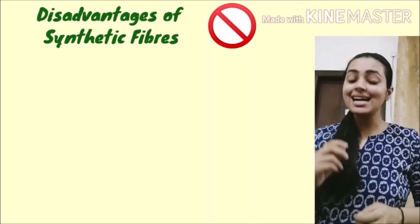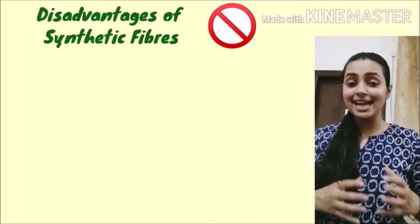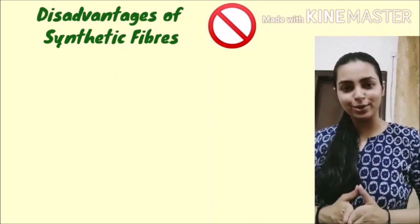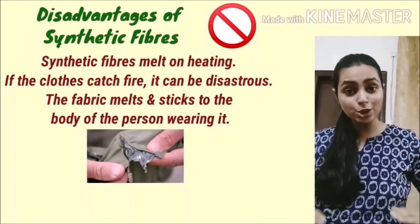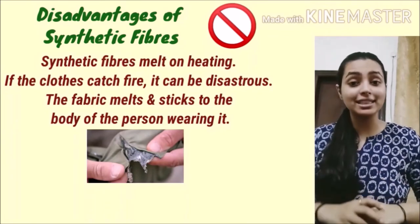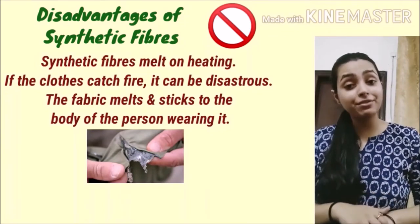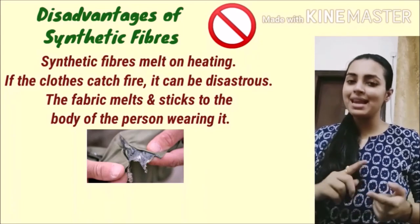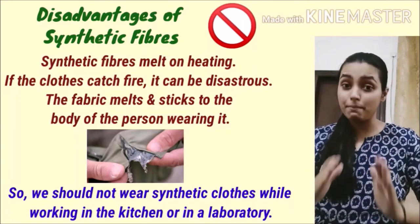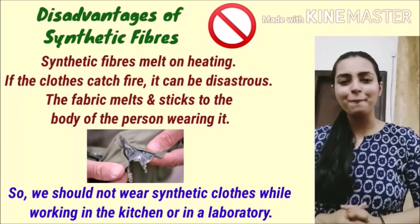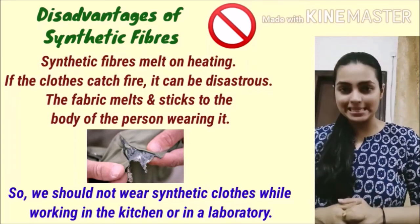Humne itne saare fayde ki baat kar li synthetic fibers ki, lekin uske disadvantages ya nuksaan ki baat nahi ki. Class 6 mein humne dekha tha ki agar synthetic fibers ko burn kiya jaye toh woh melt hokar humari body se stick ho jaate hain — jo bahut nuksaandaayak hai aur severe burns kar sakta hai. Isliye hume labs aur kitchens mein synthetic fibers pehenna avoid karna chahiye, because they can melt and stick to our body aur kaafi disastrous results de sakta hai.